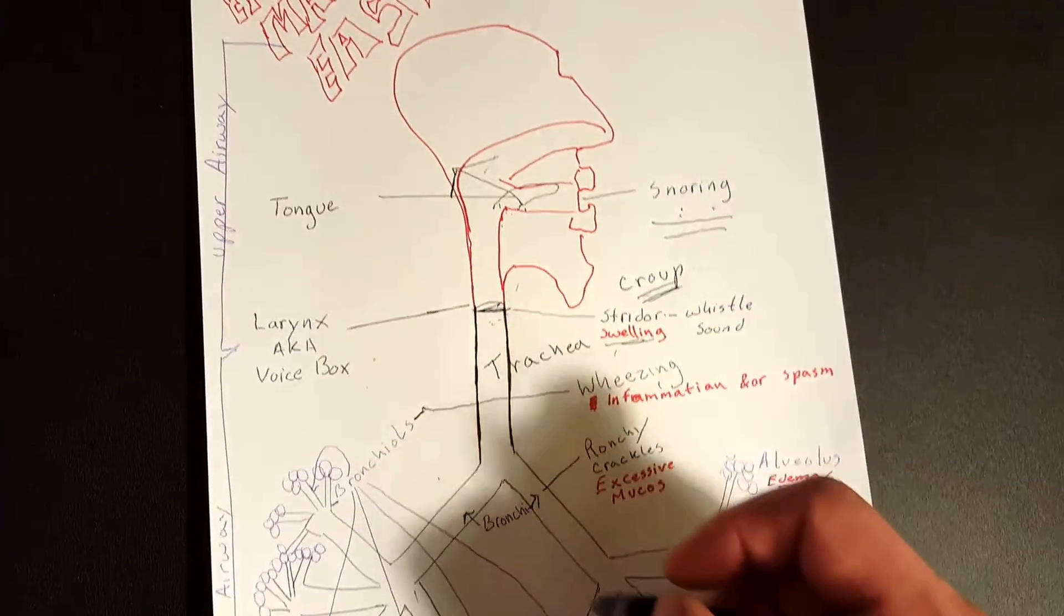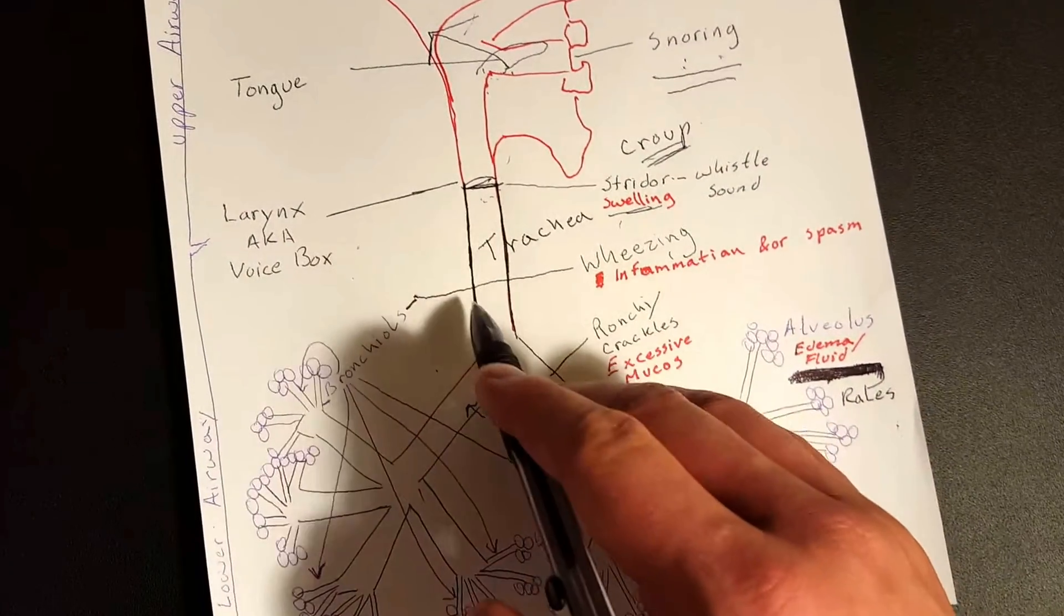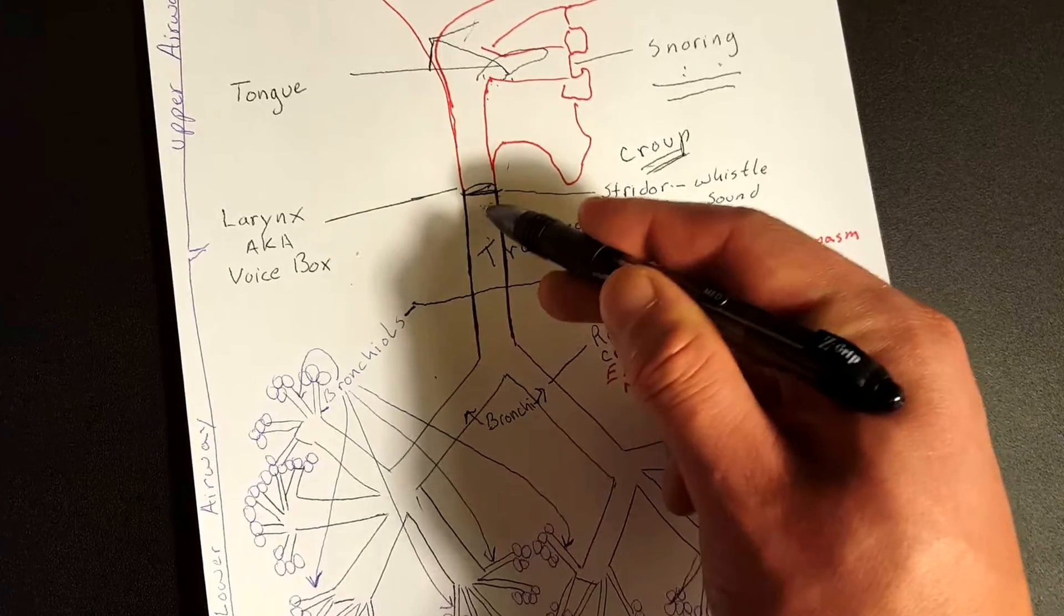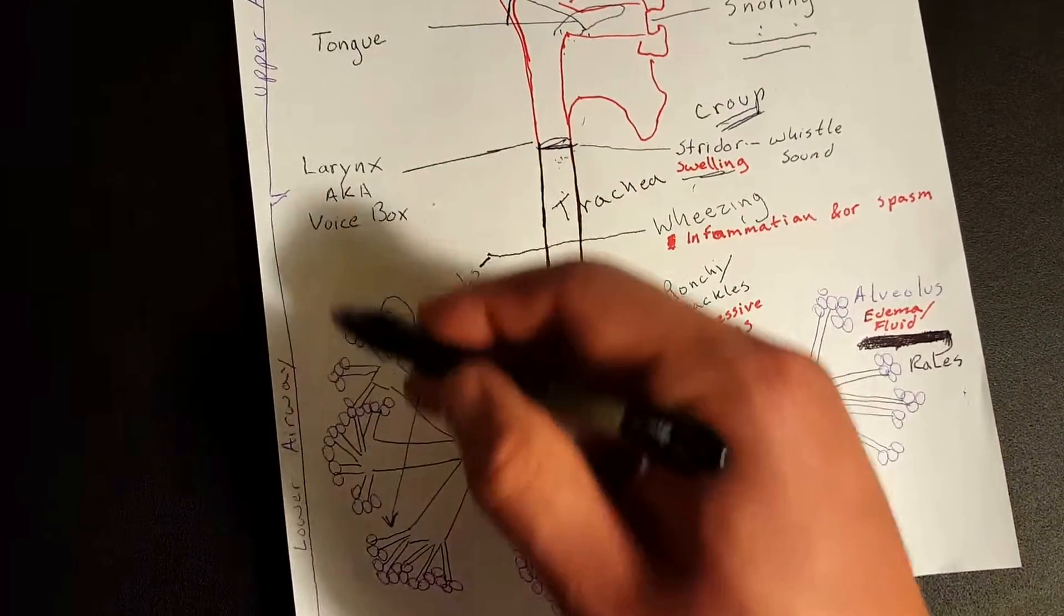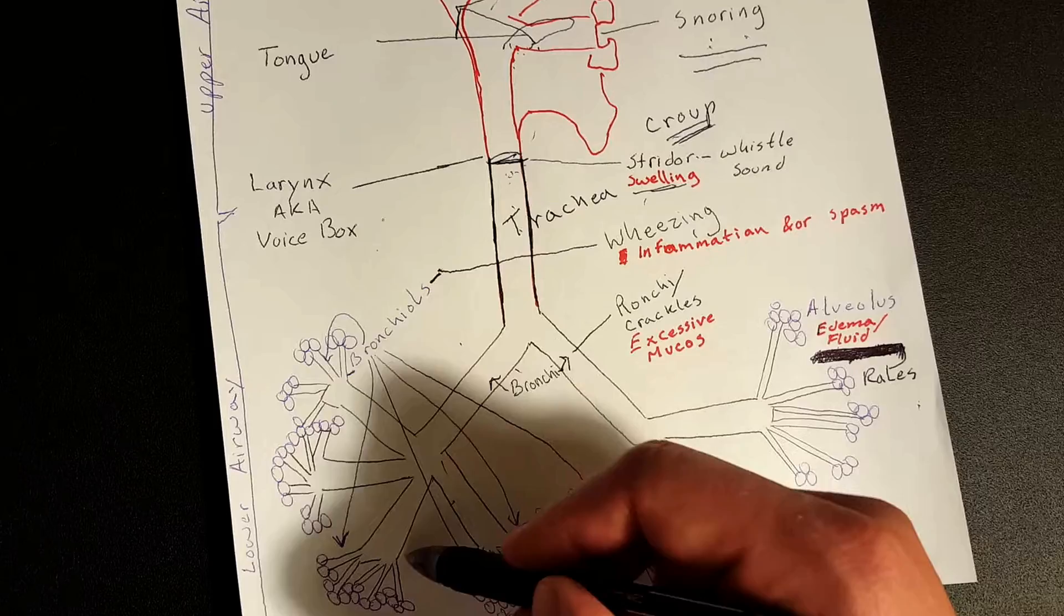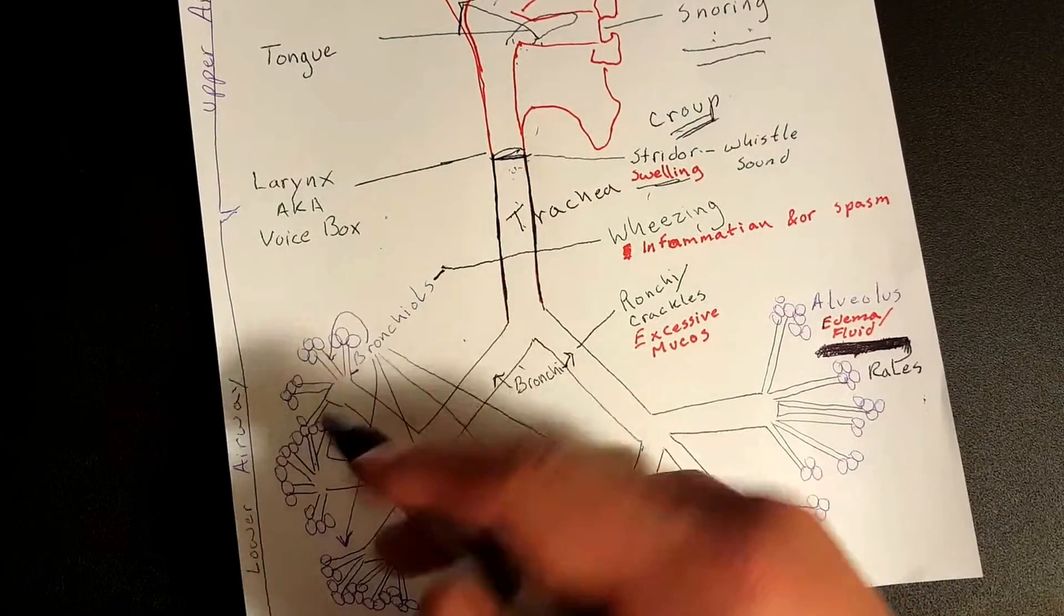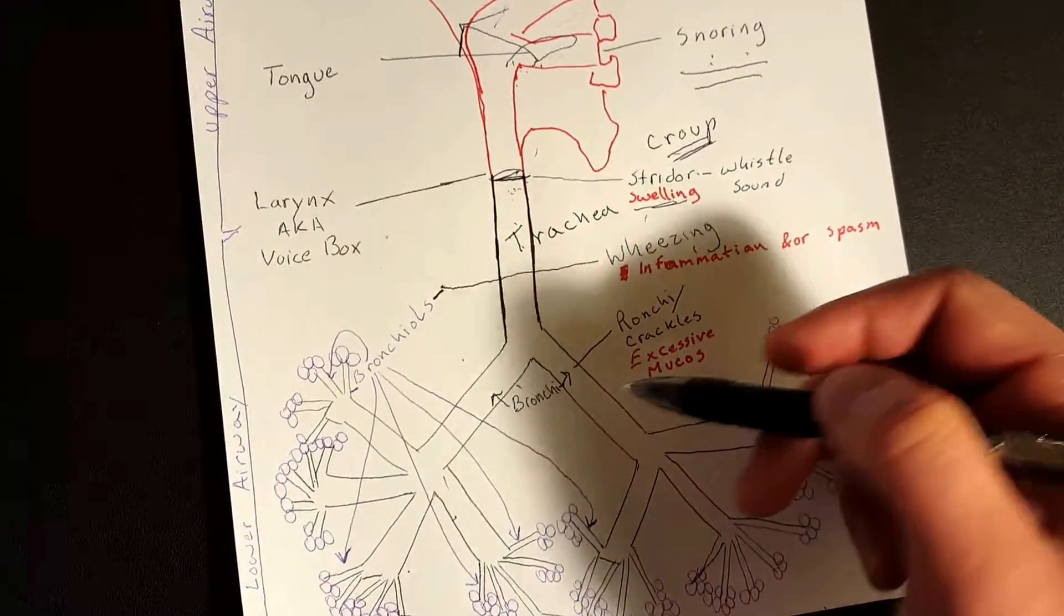Now this is your trachea. Now we're in the lower airway, right? So you have your trachea, bronchi, bronchioles, and your alveoli. All of that consists of your lower airway.